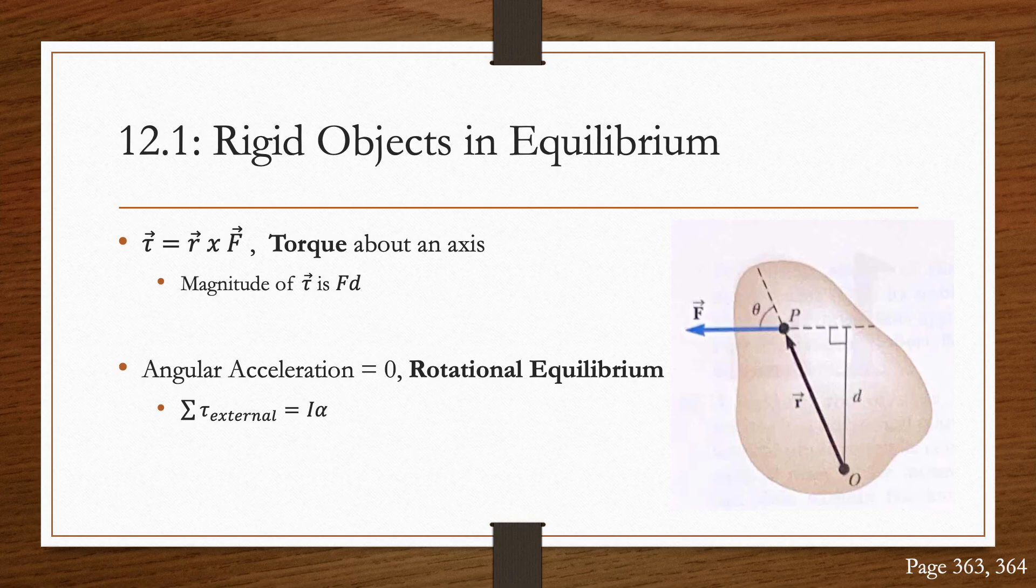But since we're only considering rigid objects, we're only going to look at situations where the angular acceleration is zero, also known as rotational equilibrium. Since the sum of torque external is I times alpha, it's necessary for the rotational equilibrium that the net torque is also zero.